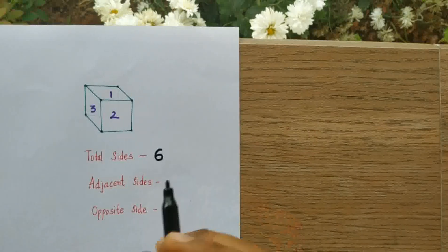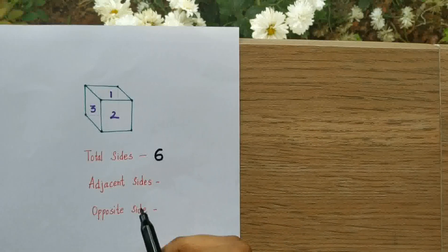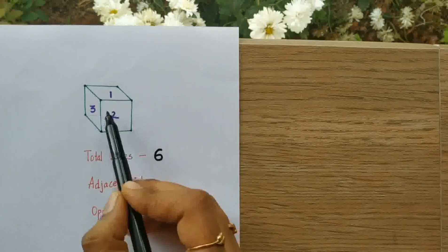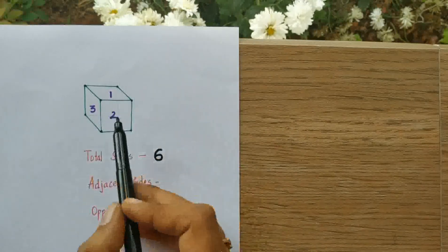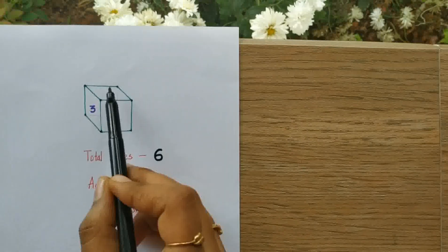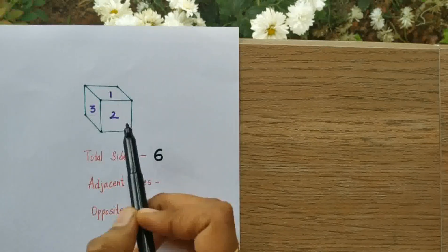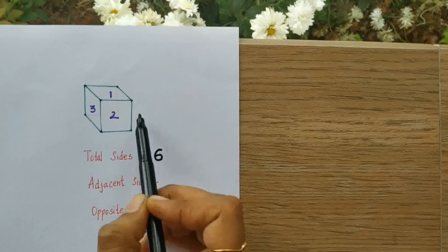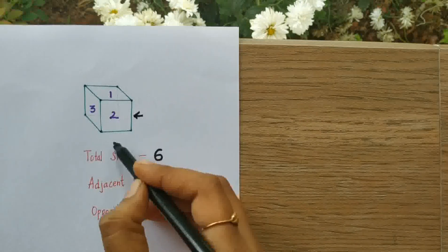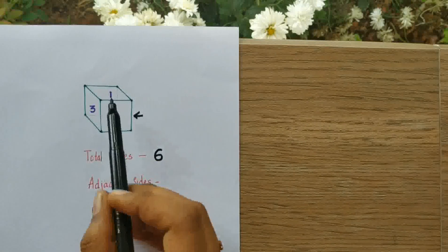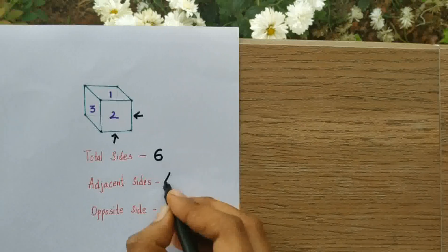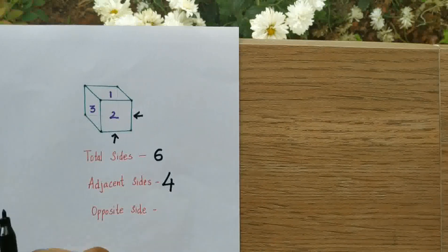So we have totally six sides. Now, how many adjacent sides can there be? Let's check for face two. Three is an adjacent side, one is definitely an adjacent side, and on this portion there will be an adjacent side, and here there will be an adjacent side — so totally four adjacent sides.